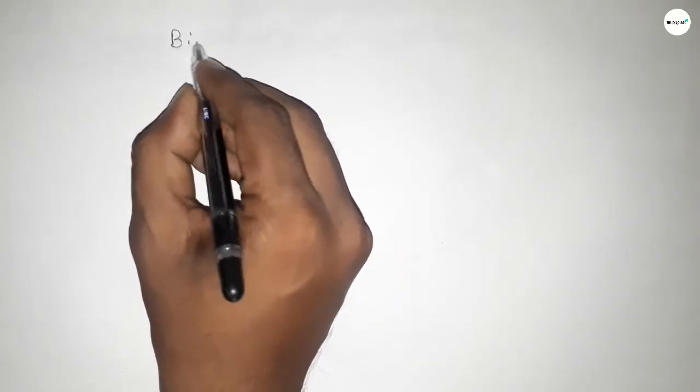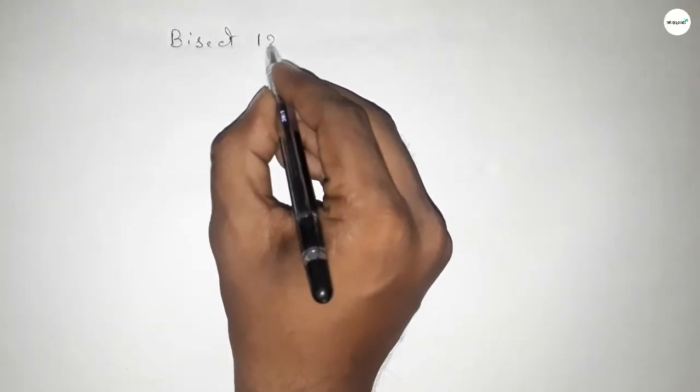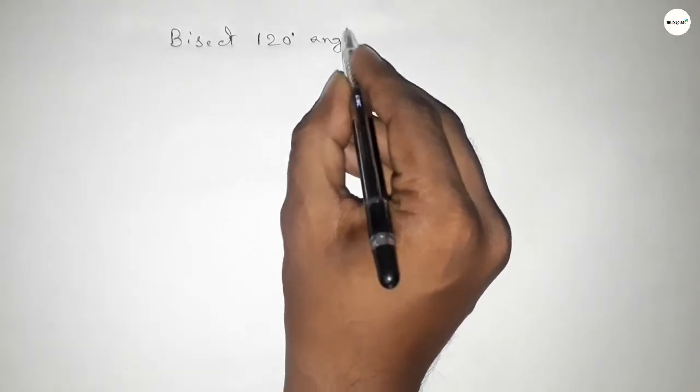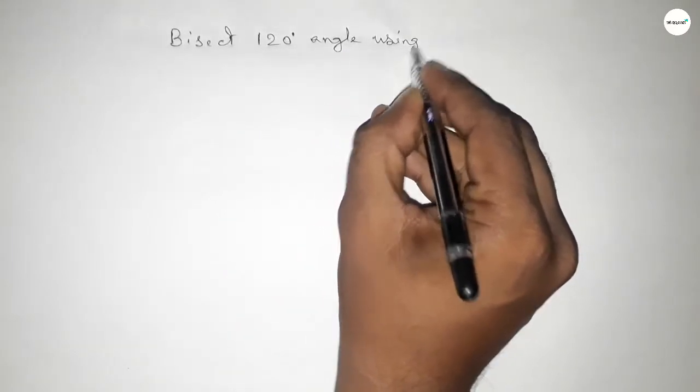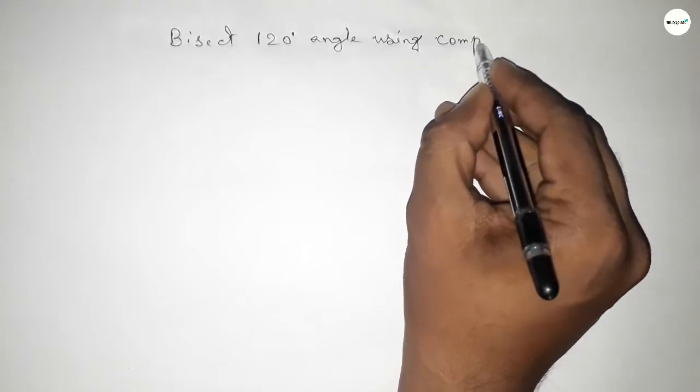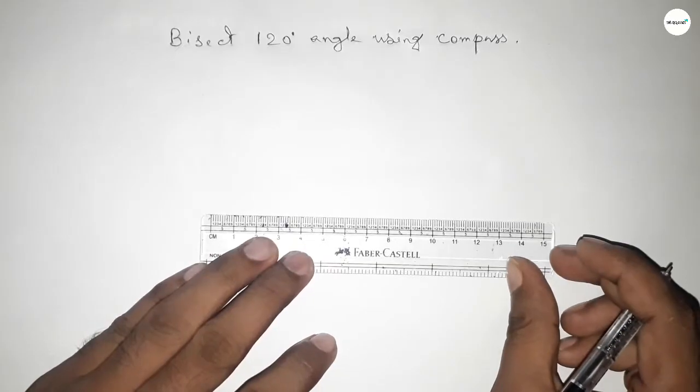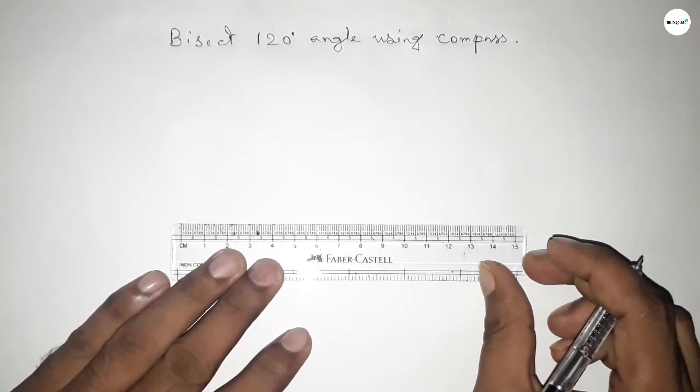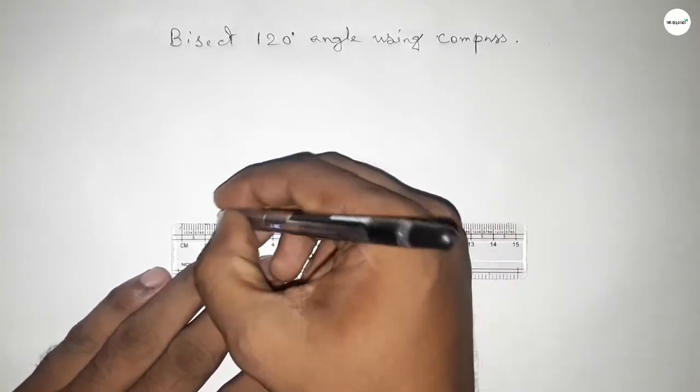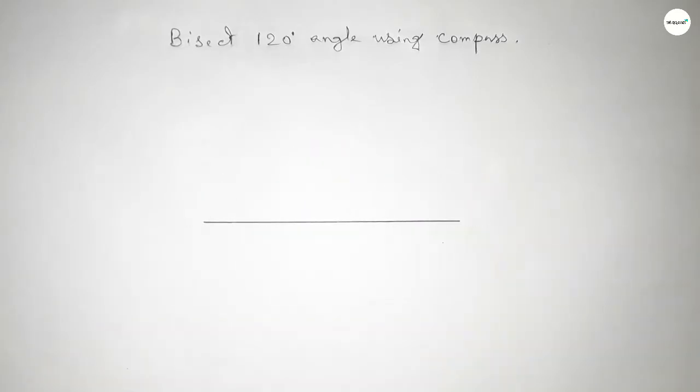Hi everyone, welcome to SSR classes. Today in this video, we have to bisect a 120-degree angle by using a compass. Let's start the video. First of all, drawing here a straight line of any length.